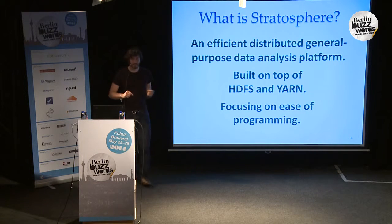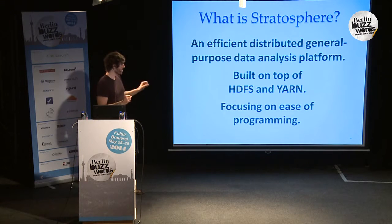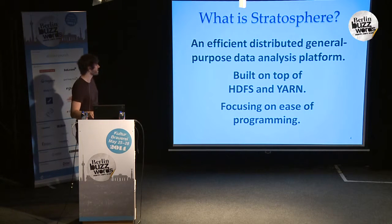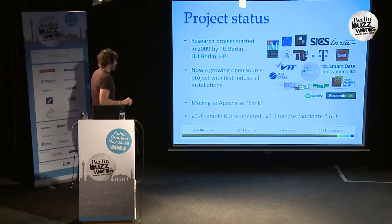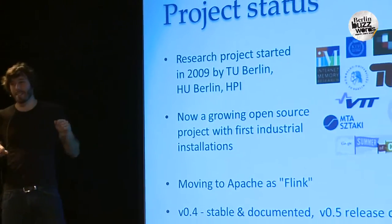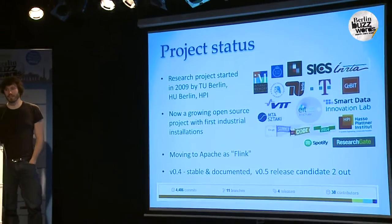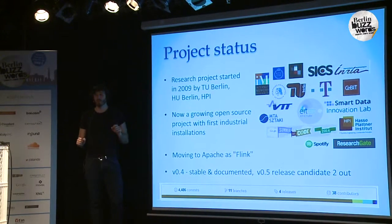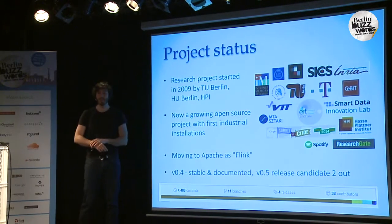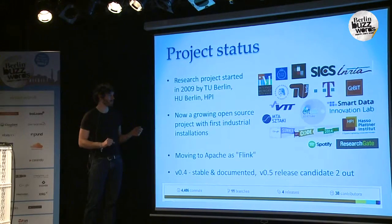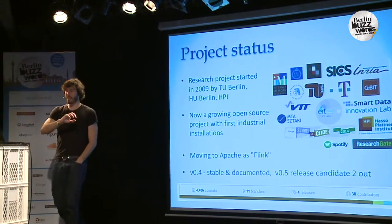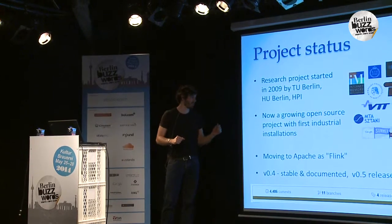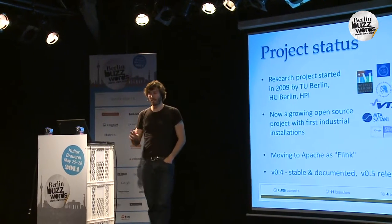It has its focus on a variety of use cases, and especially on ease of programming, providing high-level abstractions for programmers. The project started quite a while ago as a research project in the Berlin area, shared between different universities. When the research project was over, we thought the result was kind of nice and got very good feedback, so we pushed it to become an open source project. The code base is currently hosted on GitHub, and it is moving to the Apache Software Foundation under the name Flink.